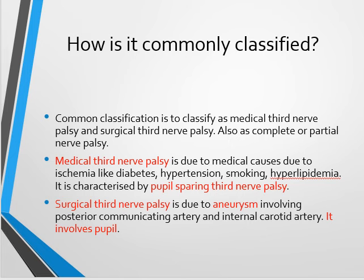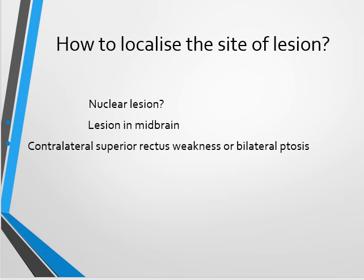We mainly classify third nerve palsy into medical and surgical types. Medical third nerve palsy represents vascular causes like diabetes and hypertension, and is characterized by pupil-sparing — the pupil will be normal. Surgical third nerve palsy is due to aneurysm involving the posterior communicating artery or internal carotid artery, and involves the pupil, so the pupil will be dilated and fixed.